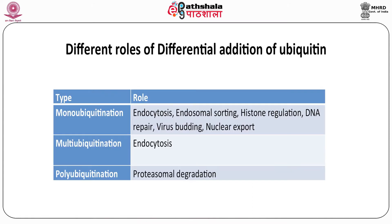Ubiquitination does not always imply the destruction of the target protein. Ubiquitination serves various functions depending on the number and the way ubiquitin molecules are added. Multi-ubiquitination is involved in endocytosis, and polyubiquitination is involved in degradation of target protein in the proteasome. Monoubiquitination plays important roles in endocytosis, endosomal sorting, histone regulation, DNA repair, budding of virus, and nuclear to cytoplasmic transport.